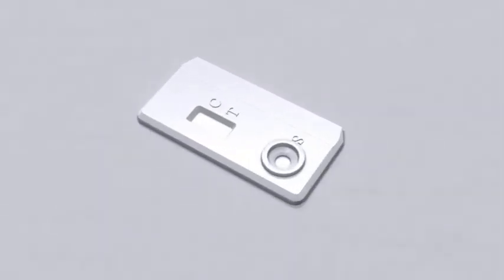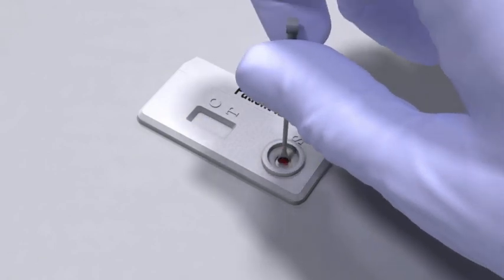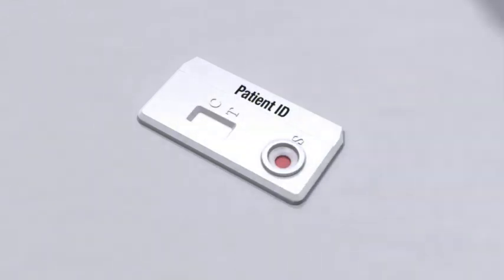Place the STATPAC device on a flat surface. Label the device with the patient name or identification. Touch the 5 microliter loop to the specimen, allowing the loop to fill. Hold the loop vertically. Touch it to the sample pad in the center of the sample well of the device to dispense the 5 microliters of sample to the sample pad.